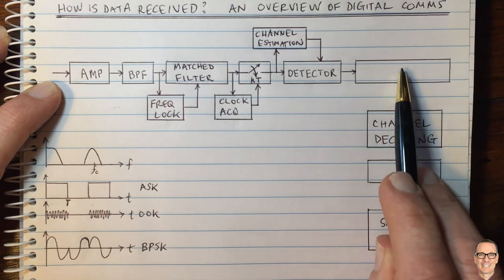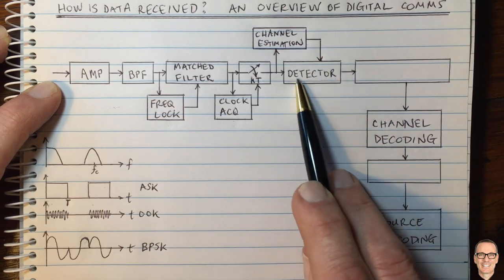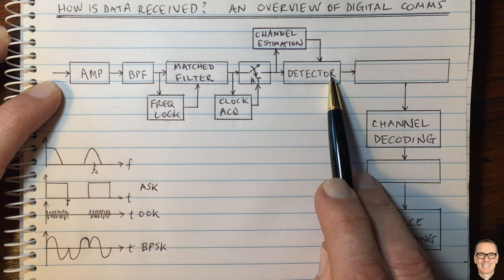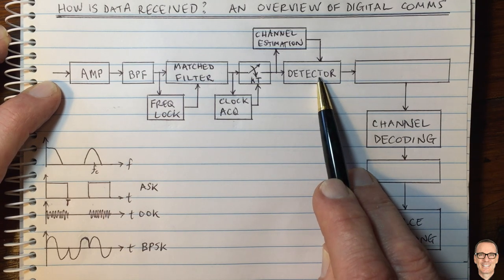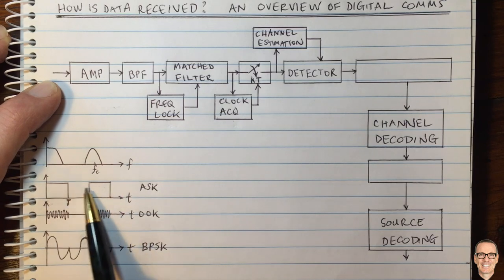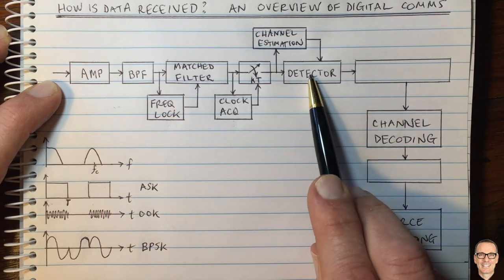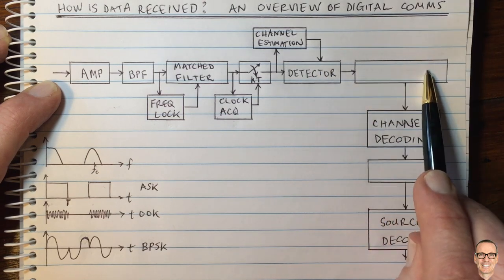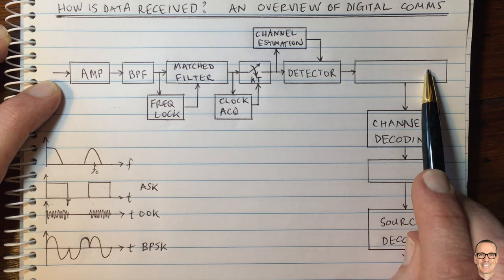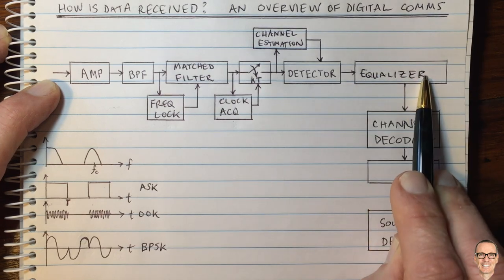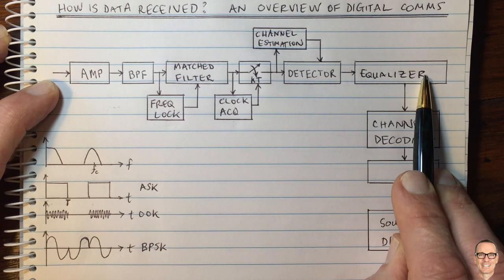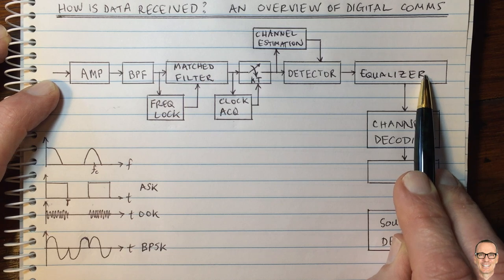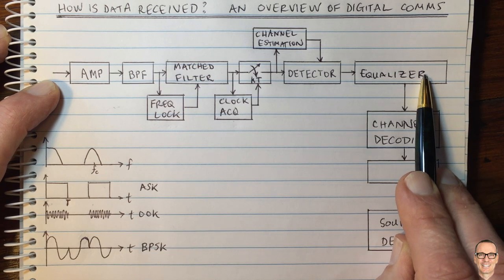What's this next box? The detector only works if there's no inter-symbol interference. But if the channel has caused these symbols to spread into each other, you need to undo that effect. After the detector, there will be something called an equalizer. The equalizer undoes the effect of inter-symbol interference in the channel. For more details, check the links below this video.